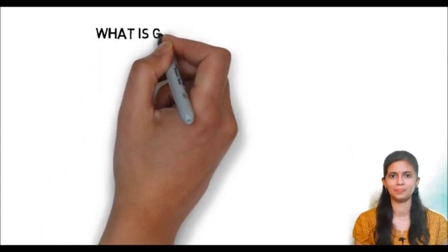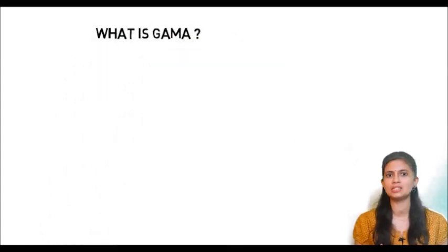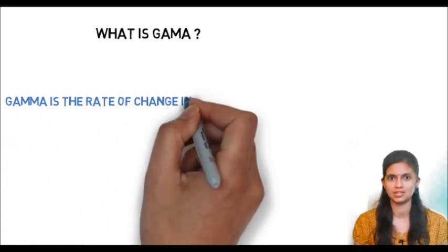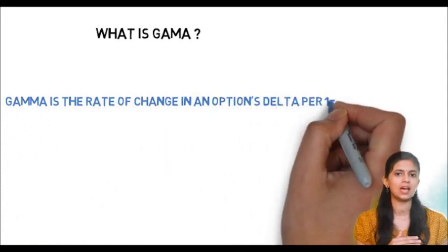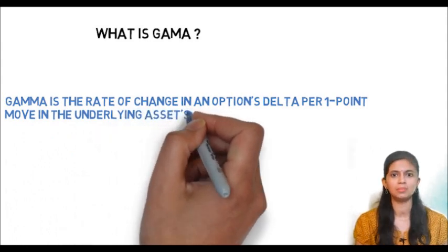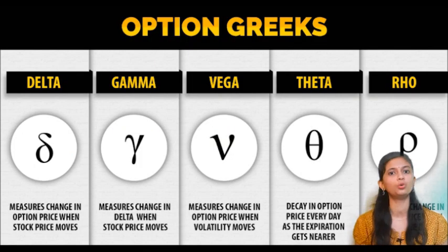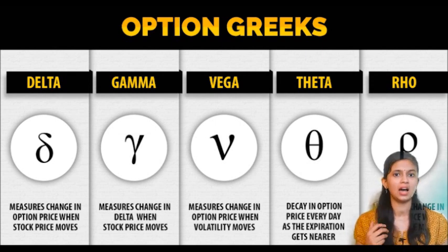Gamma is a rate of change in delta — that is, the speed at which delta changes. Gamma is at its highest when options are at the money, and gamma is at its lowest when the options are out of the money. On the expiry date, gamma will be high.